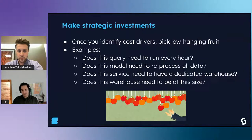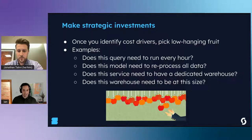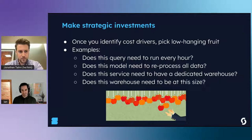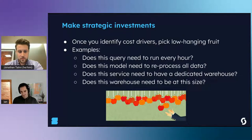Once you have visibility into your different cost drivers, it becomes straightforward to pick low-hanging fruit. You can look at a query and ask: do we really need to run this every hour, or could we live with once a day? Does this model need to reprocess all the data every time, or could we convert it to incremental? Does this service need a dedicated warehouse, or could we consolidate those workloads onto another warehouse? Does this warehouse need to be at this particular size, or could we live with some queries running a bit slower?